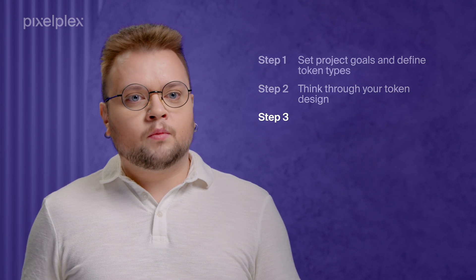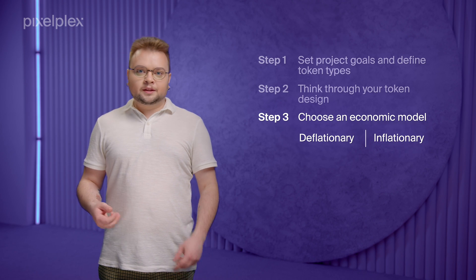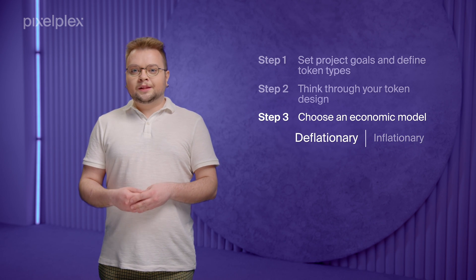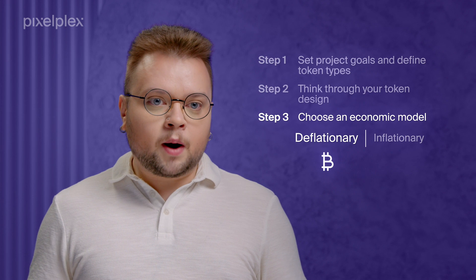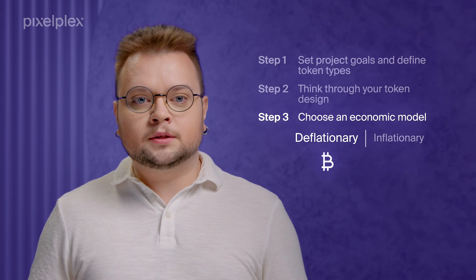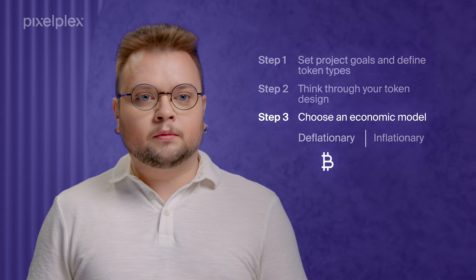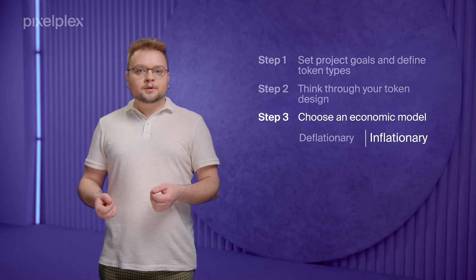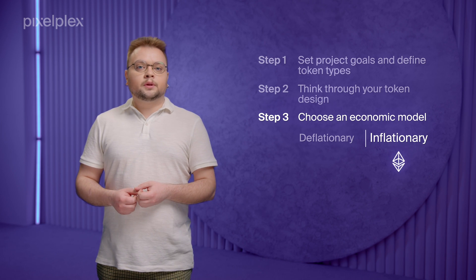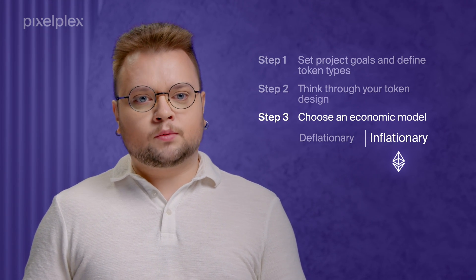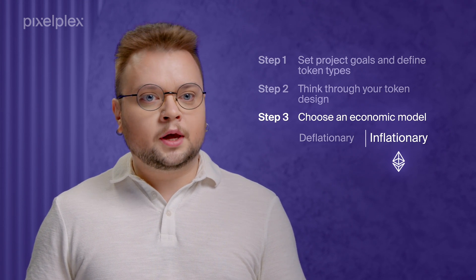Step 3: choose an economic model. Deflationary and inflationary are the two major types of token economic models. The deflationary model means you will create a limited number of tokens – this is how Bitcoin works, with only 21 million Bitcoins ever. As of March 2023, over 19 million had been mined, leaving just over 1.7 million left to mine. This model creates scarcity and raises the price when supply goes down. With the inflationary model, the number of tokens is unlimited and can grow over time. Ethereum is a good example, with 122.3 million coins in circulation as of March 15, 2023, and no maximum supply.